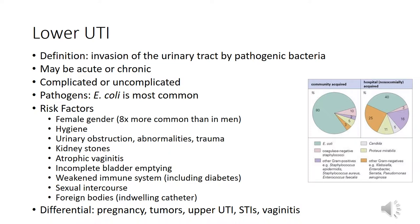Infections can be complicated or uncomplicated. Complicated is when the infection occurs in a male, during pregnancy, in patients with indwelling catheters, patients with recurrent infections, structural or functional problems with the urinary tract, recent instrumentation or surgery, a history of multi-drug resistance, diabetes, or immunocompromise. The most common pathogen is E. coli.